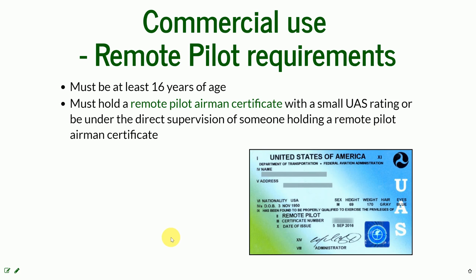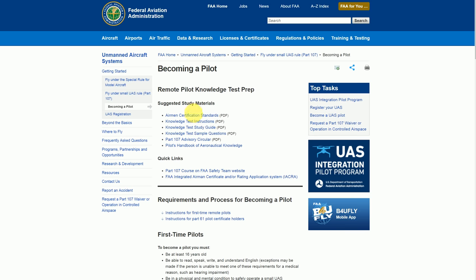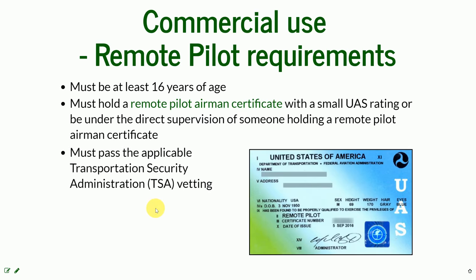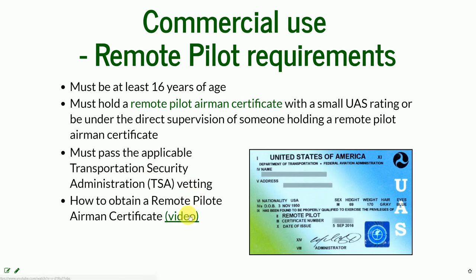To obtain the remote pilot airman certificate, more information is available under a linked FAA web page where you can find the certification standards, test instructions, and quick links for those who want to obtain Part 107 certification. You should also expect to be required to pass TSA vetting. There is also a short two-minute YouTube video where an FAA representative explains the entire process of obtaining the remote pilot airman certificate.